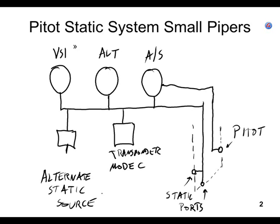The transponder gets its pressure altitude out of the static system. If both static ports are clogged, you can pull the alternate static source knob and get pressure from inside the cabin, which will make the altimeter read about 50 feet too low. Research shows debate over which of the two static ports is primary and which is the drain.